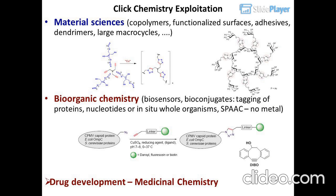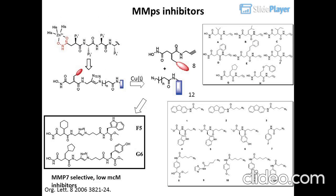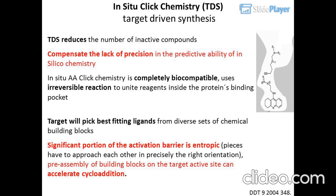SPAC: no metal required. Drug development and medicinal chemistry: MMP inhibitors — HUI-12 and MMP7-selective low-nanomolar inhibitors (Org. Lett. 8, 2006, 3821–24). In Situ Click Chemistry and Target-Driven Synthesis (TDS).